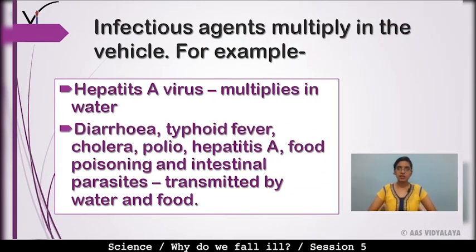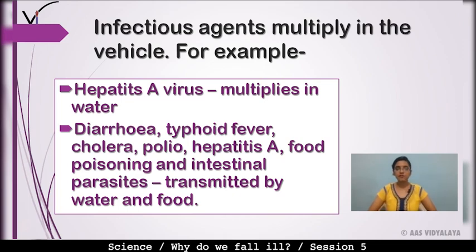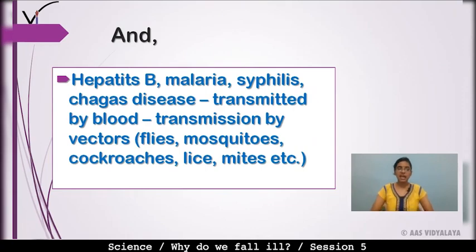Infectious agents multiply in the vehicle (carrier). For example, hepatitis A virus multiplies in water. Diseases like diarrhea, typhoid fever, cholera, polio, hepatitis A, food poisoning, and intestinal parasites are transmitted through water and food.